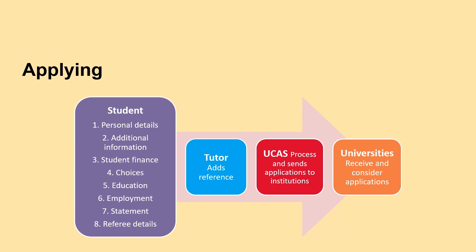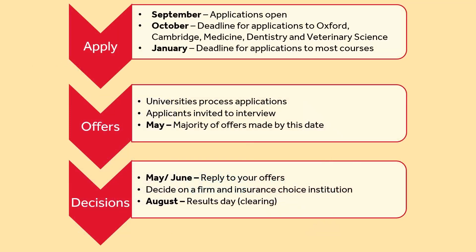After this, universities receive your application and will consider them equally by the January deadline. In terms of the UCAS timeline: in September applications open. In October this is the deadline for applications to Oxford, Cambridge, Medicine, Dentistry and Veterinary Science. So if this applies to you, it's really important to remember that you have a sooner deadline.